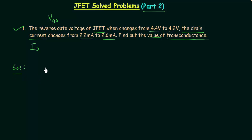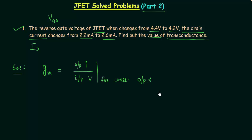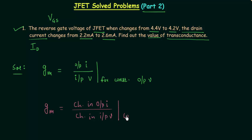Transconductance is represented by G subscript small m. If you remember the hybrid pi model lecture, we discussed what transconductance is. Transconductance is equal to the ratio of output current to input voltage for constant output voltage. In JFET, GM is the common representation for transconductance, and it is equal to the change in output current to the change in input voltage for constant output voltage.